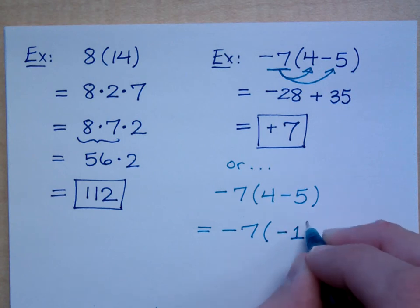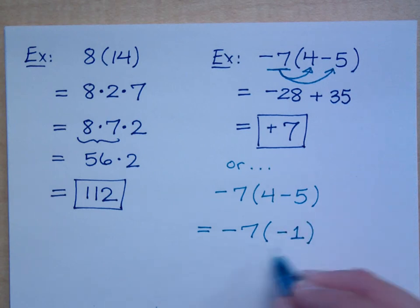Negative 1. What's negative 7 times negative 1? Negative times a negative equals a positive. Negative 7.